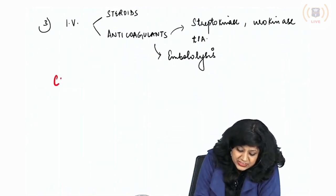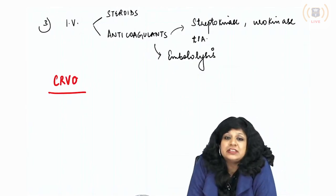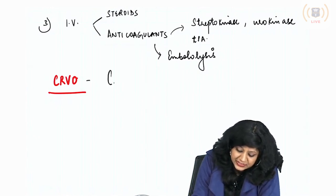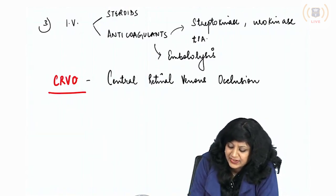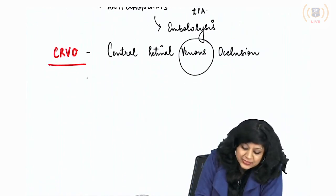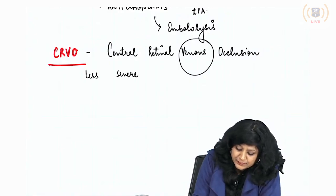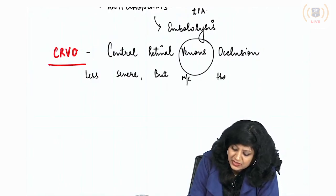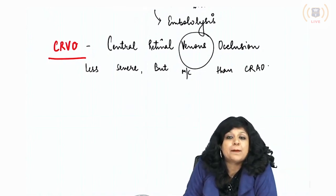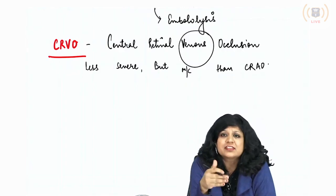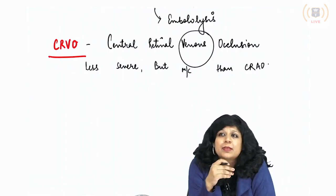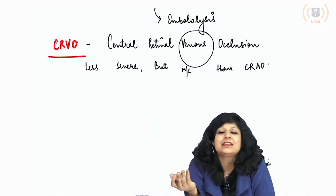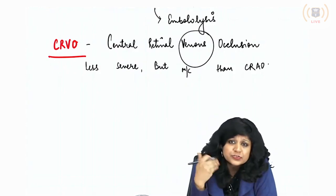Coming to CRVO — central retinal venous occlusion. Compared to CRAO, it is less severe but more common. Nature's balance: less severe things are more common, more severe things are less common.